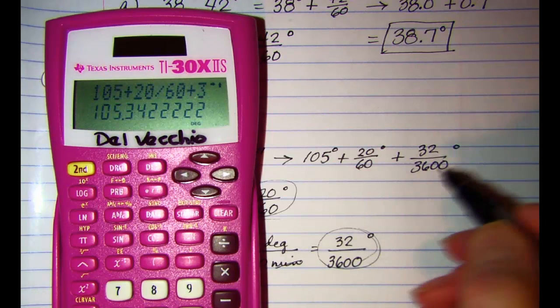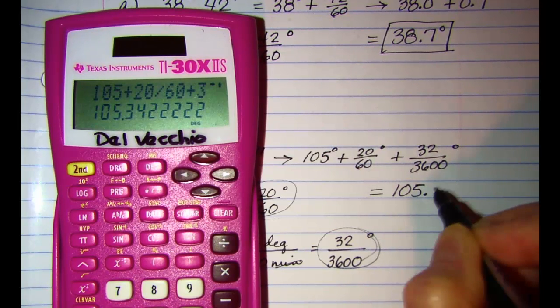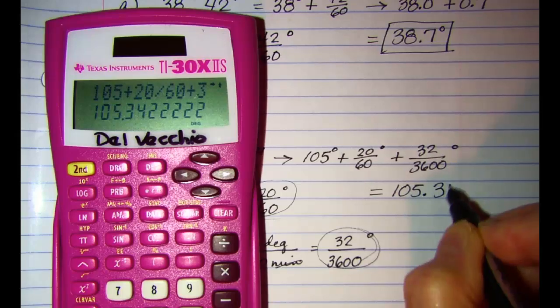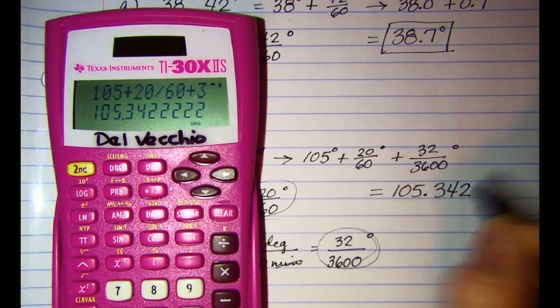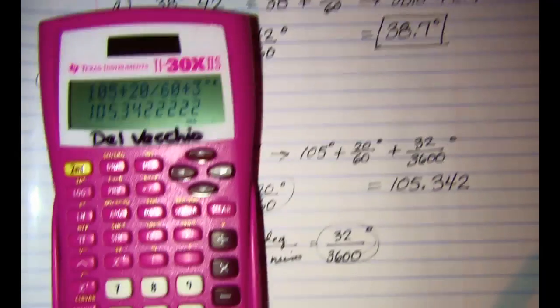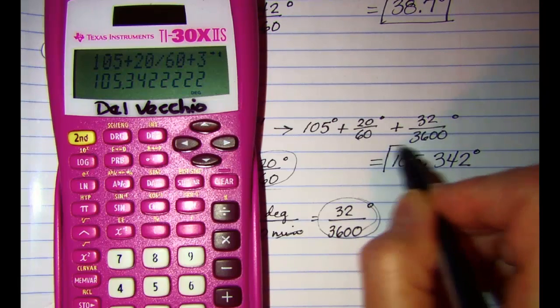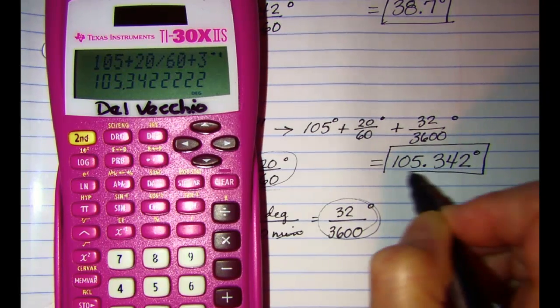And it looks like we have 105.342. Because we're asked to round to the nearest thousandth, so we'll put our unit symbol on there and we're finished.